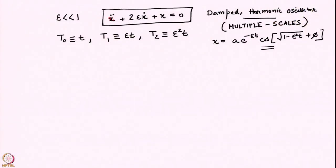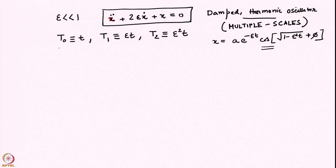In order to reflect that description, we convert from a single time variable to at least three different time scales: t0, t1, and t2. You can go higher, but we will have to do more algebra to obtain solutions up to a given order in epsilon. We are going to do this up to order epsilon squared and see what we get as a consequence.